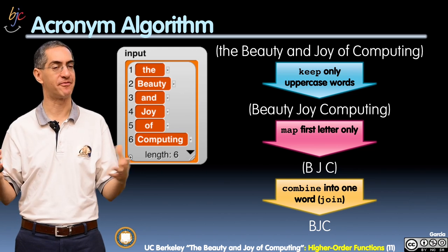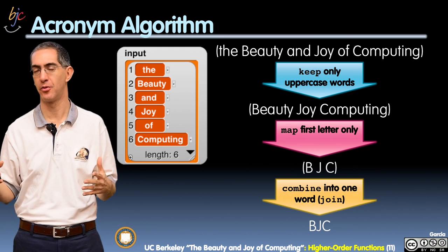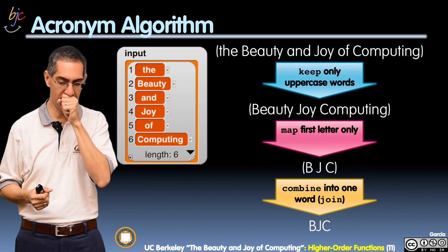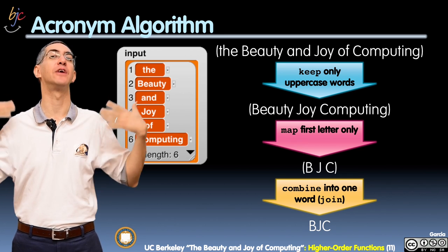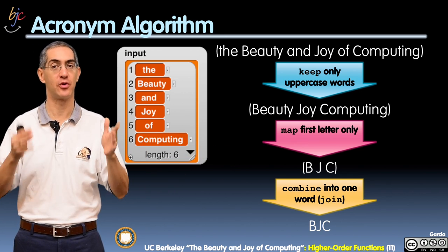You first run it through a keep. The first step is the keep filter. We're going to strip away all the lowercase words, or said another way, keep only the uppercase words, and I'm left with Beauty, Joy, Computing.